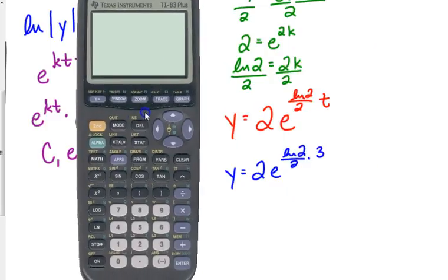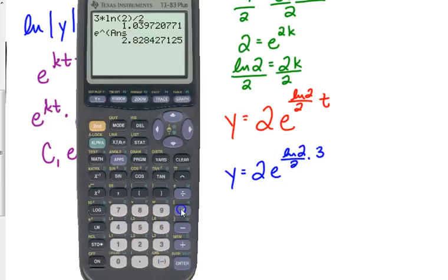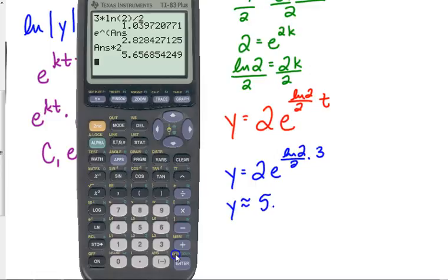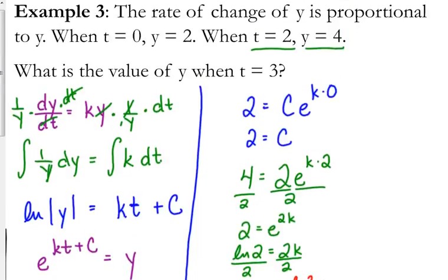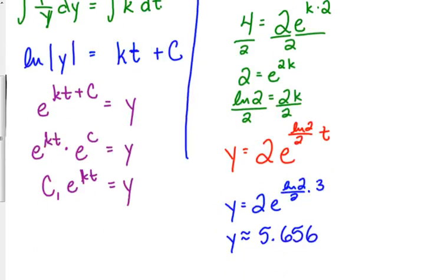So let's crunch those numbers. 3 times the natural log of 2 divided by 2, raise e to that power, and multiply it by 2. So when t equals 3, y is approximately 5.656.